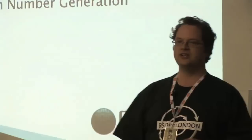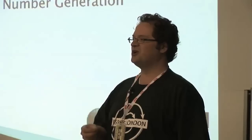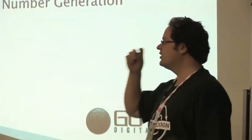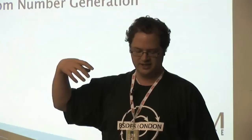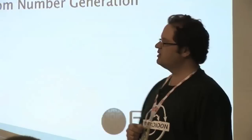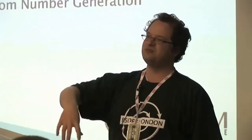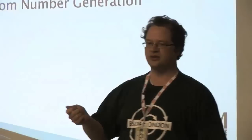We have 50 minutes and I'm going to tempt the demons of fate and try live demos. We're going to look at three main topics: ECB mode crypto — which even though people know is bad, is still used; padding oracles; and a brief coverage of random number generation weaknesses. All three are things we find in pen tests, so the question is: are you looking for them?